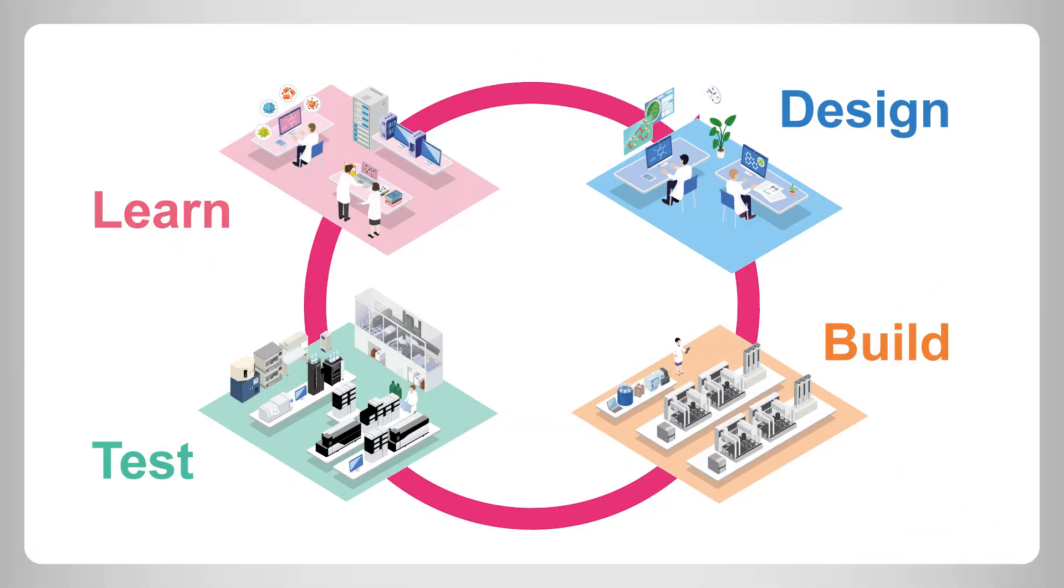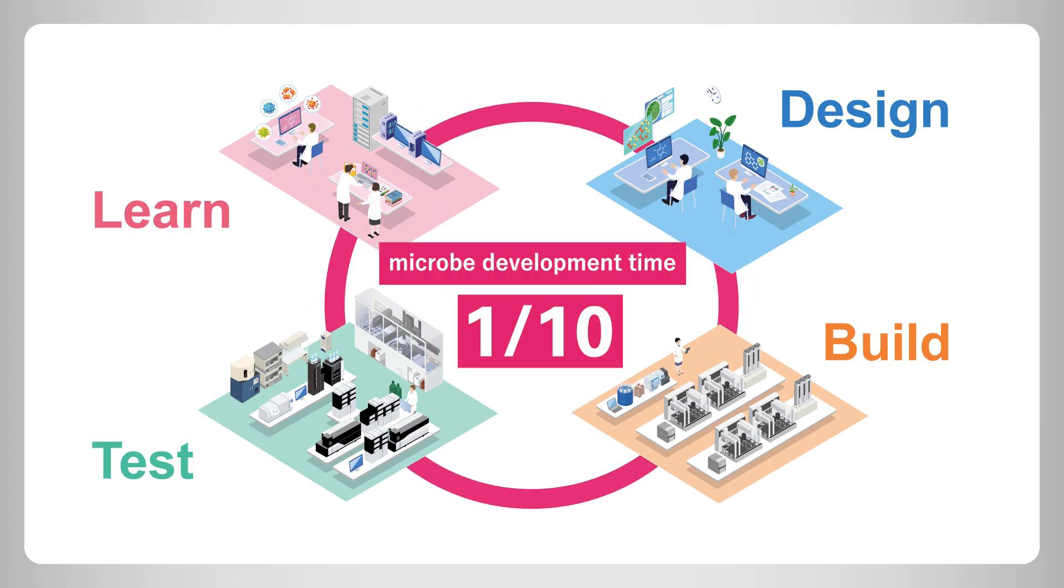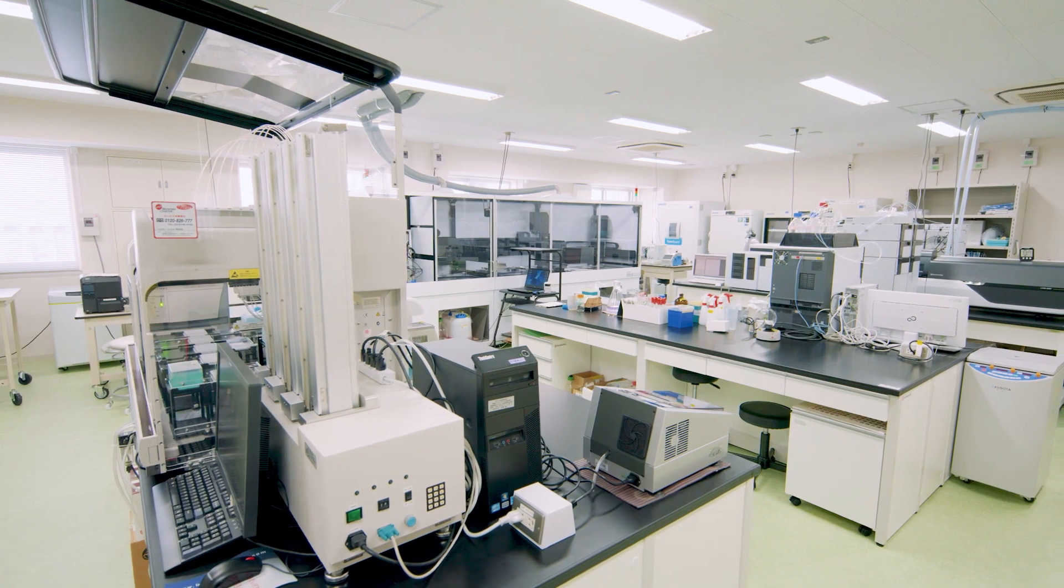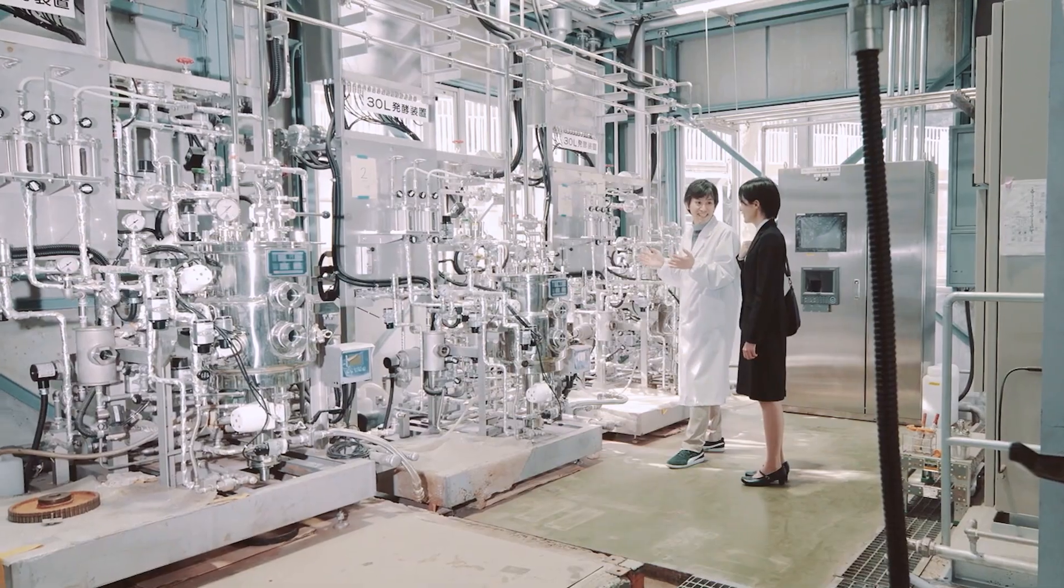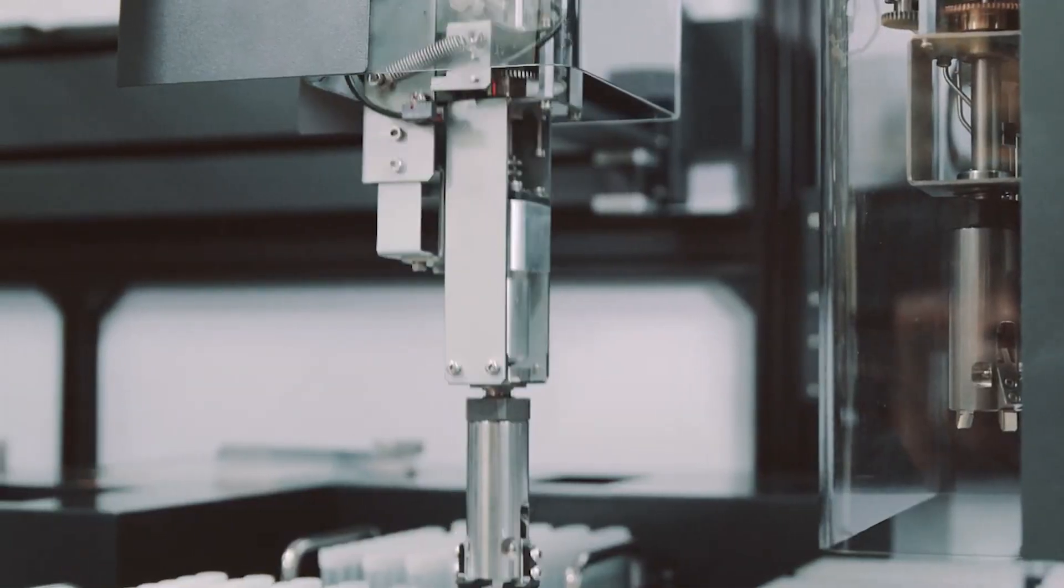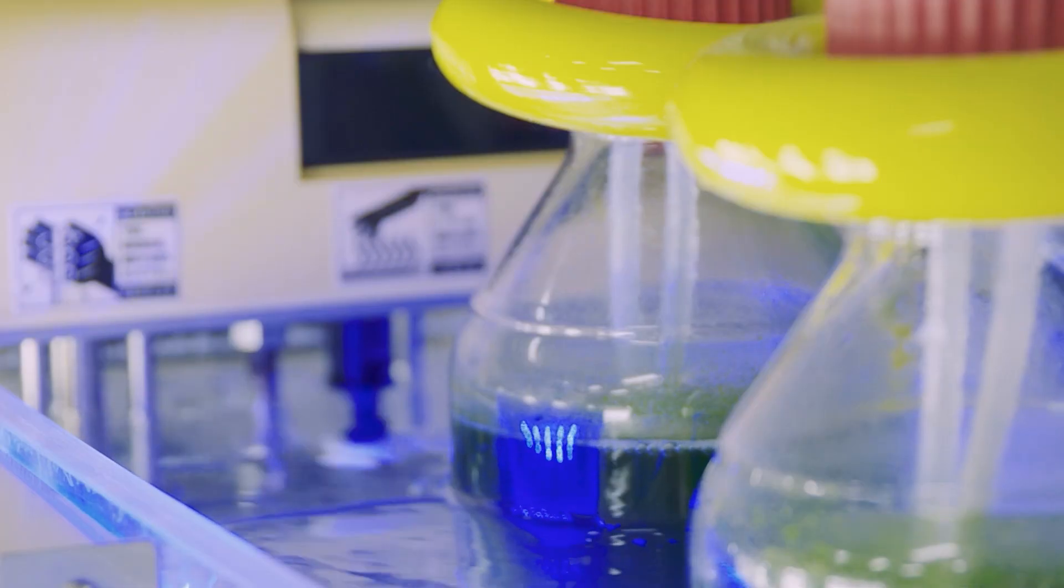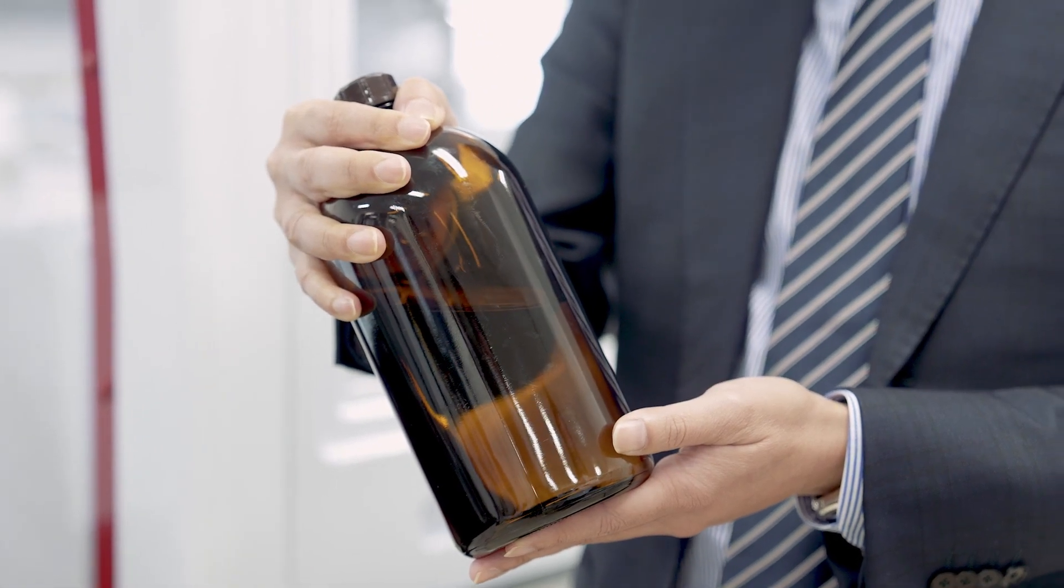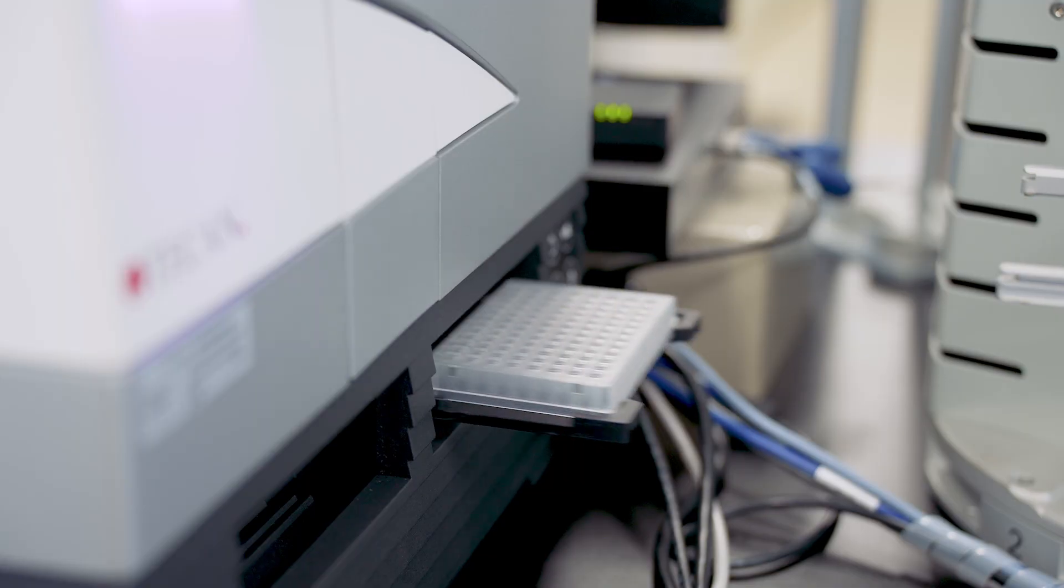Our goal is to reduce the microorganism development time to one tenth of the conventional time. The EGBRC has been conducting research to develop bioprocesses and technologies for the sustainable production of commodities and liquid fuels from biomass with microorganisms developed using the DBTL cycle.